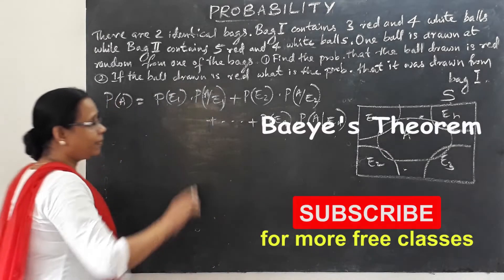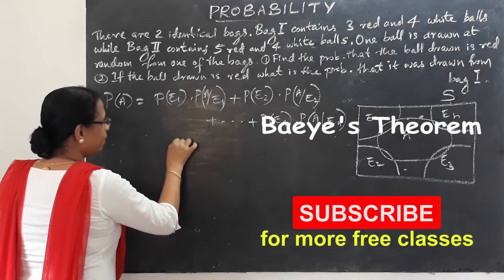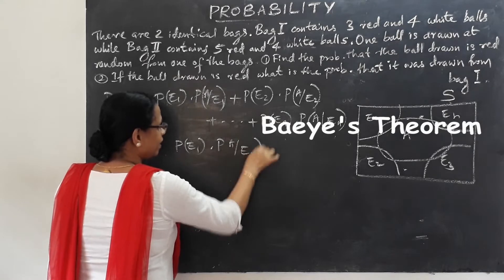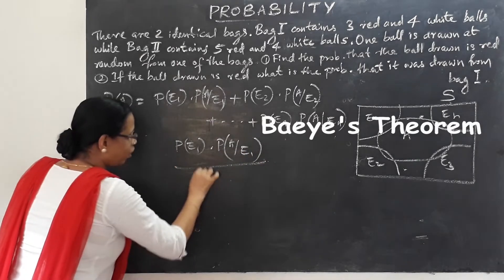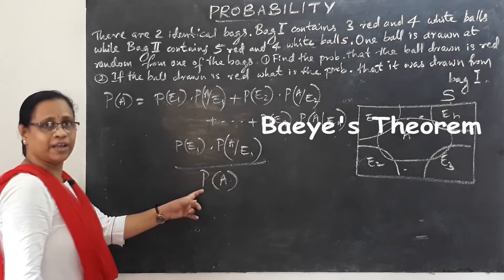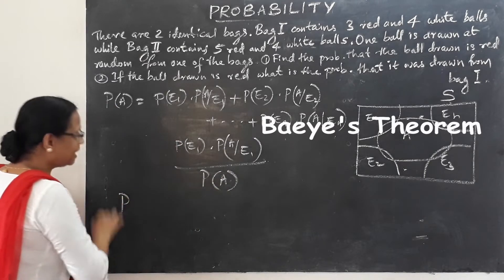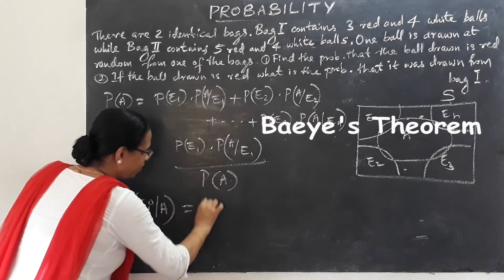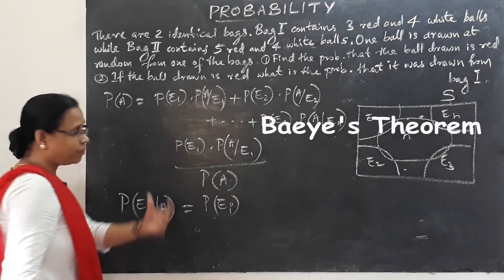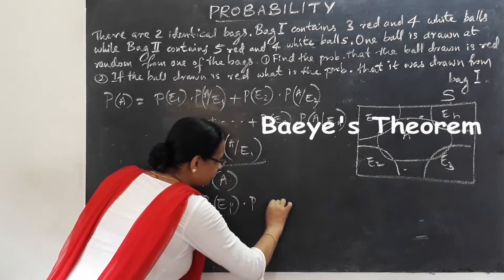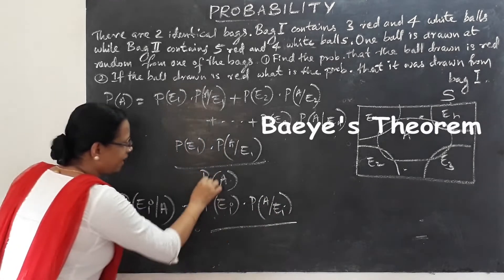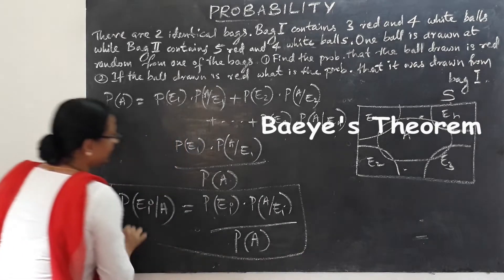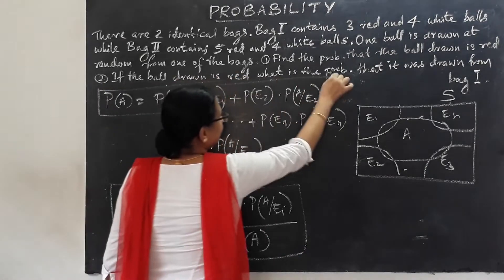For a particular partition, the probability is P(Ei) into P(A|Ei), divided by the total probability P(A). This is Bayes' theorem, and this is the Theorem of Total Probability.